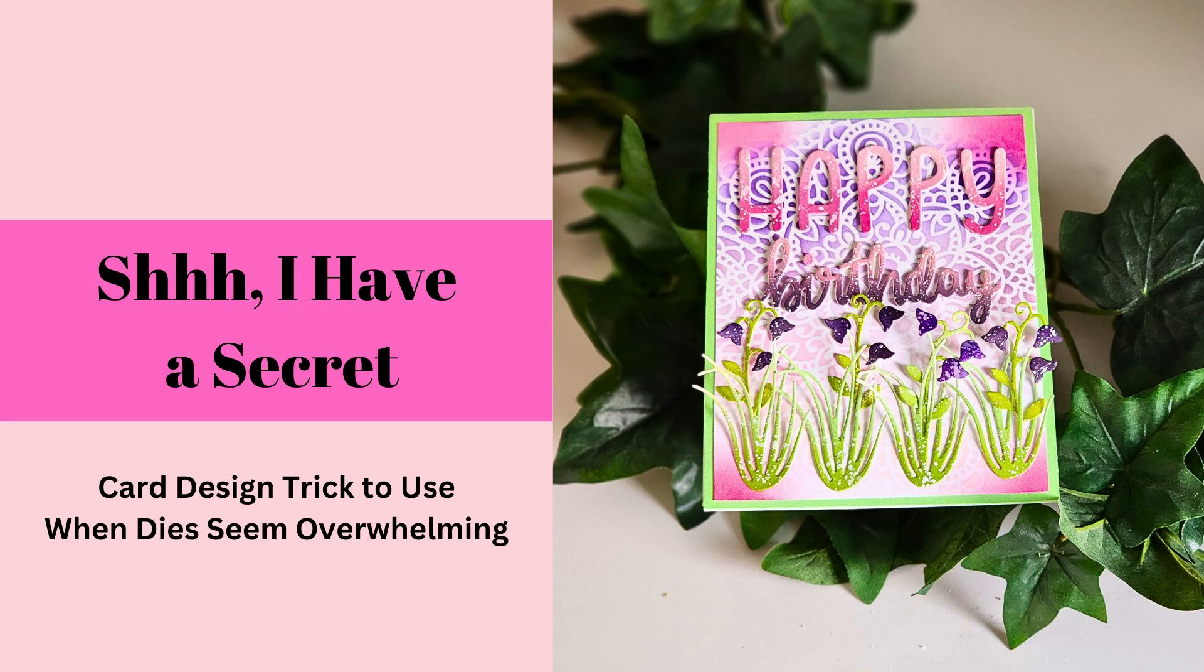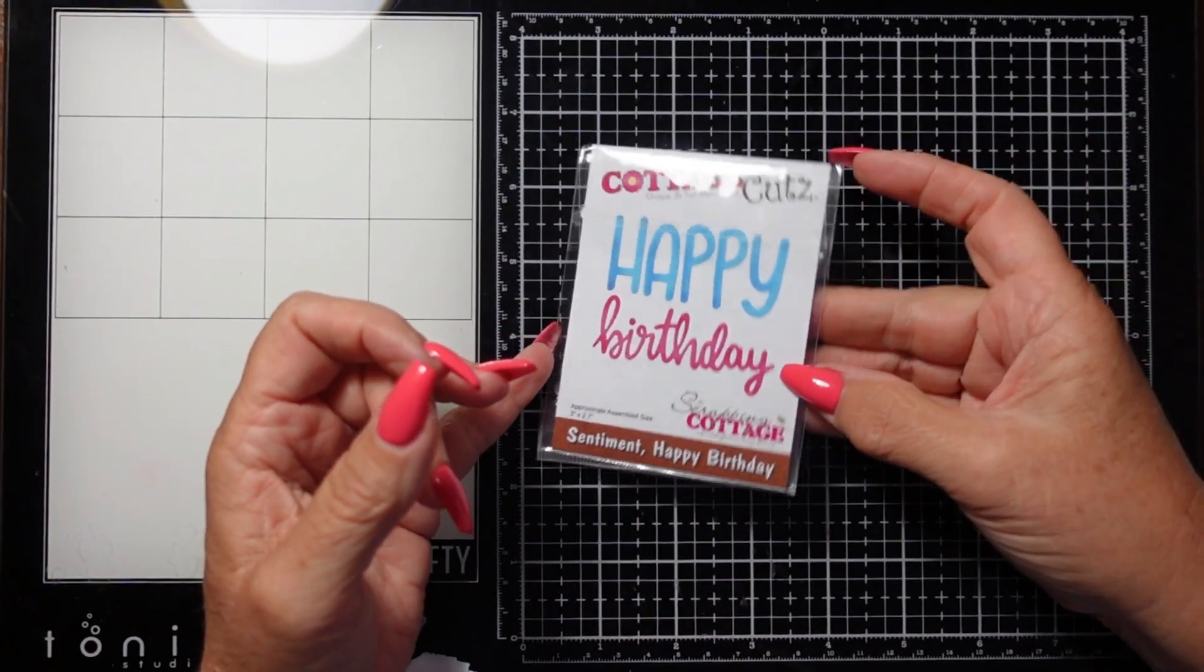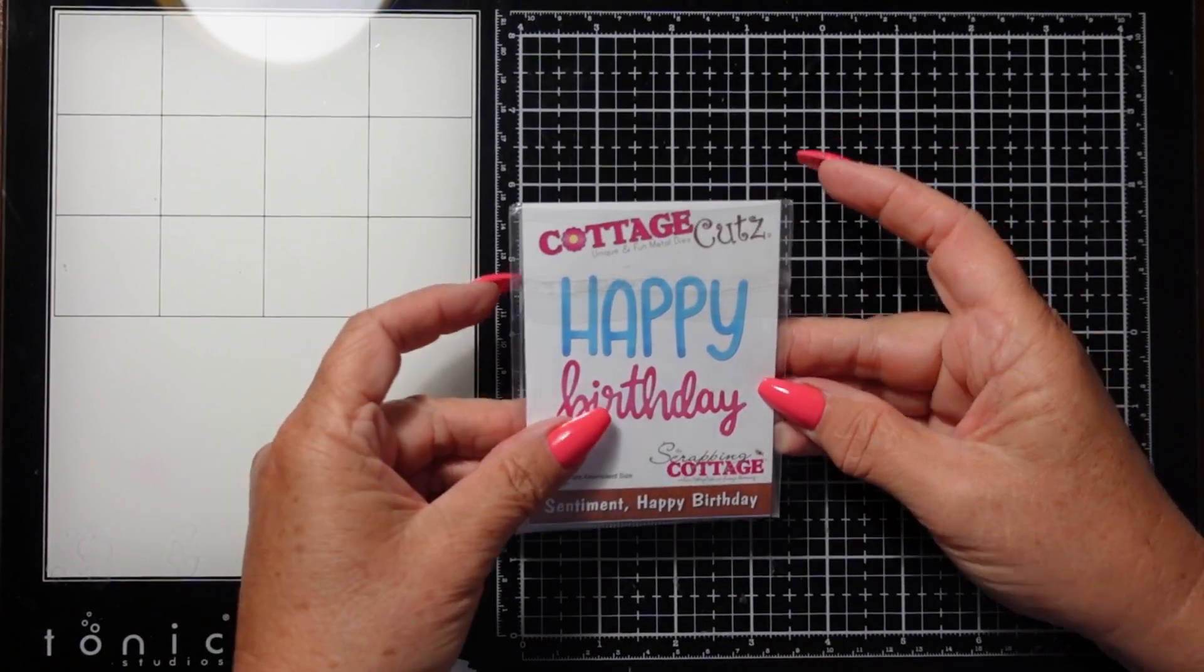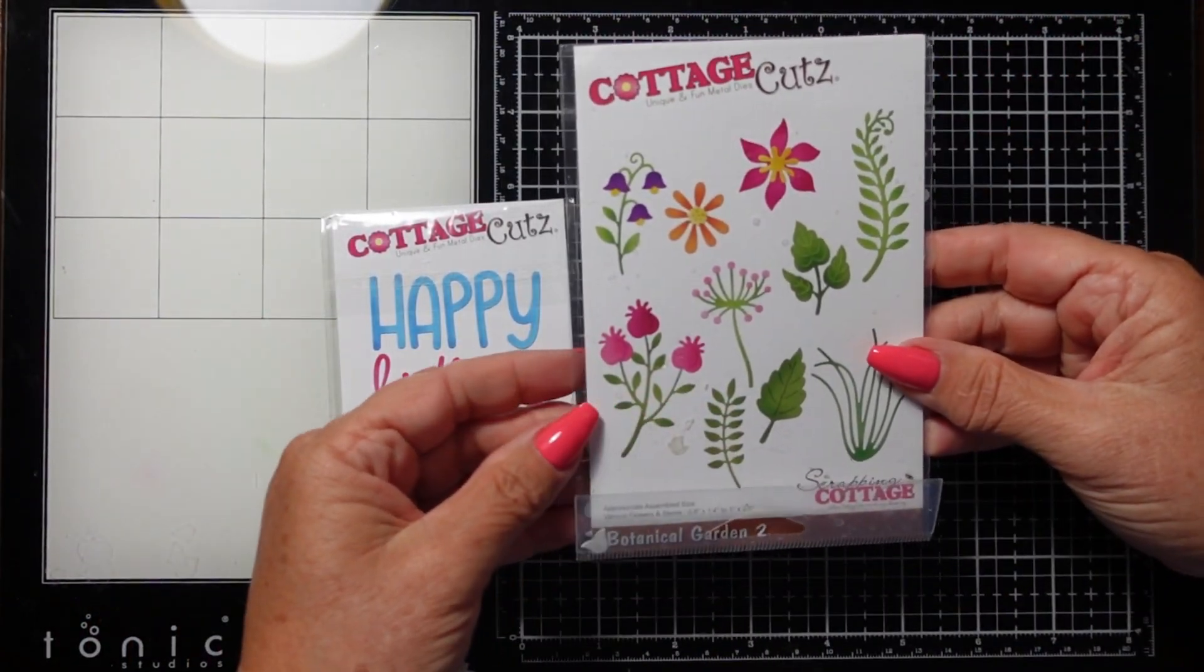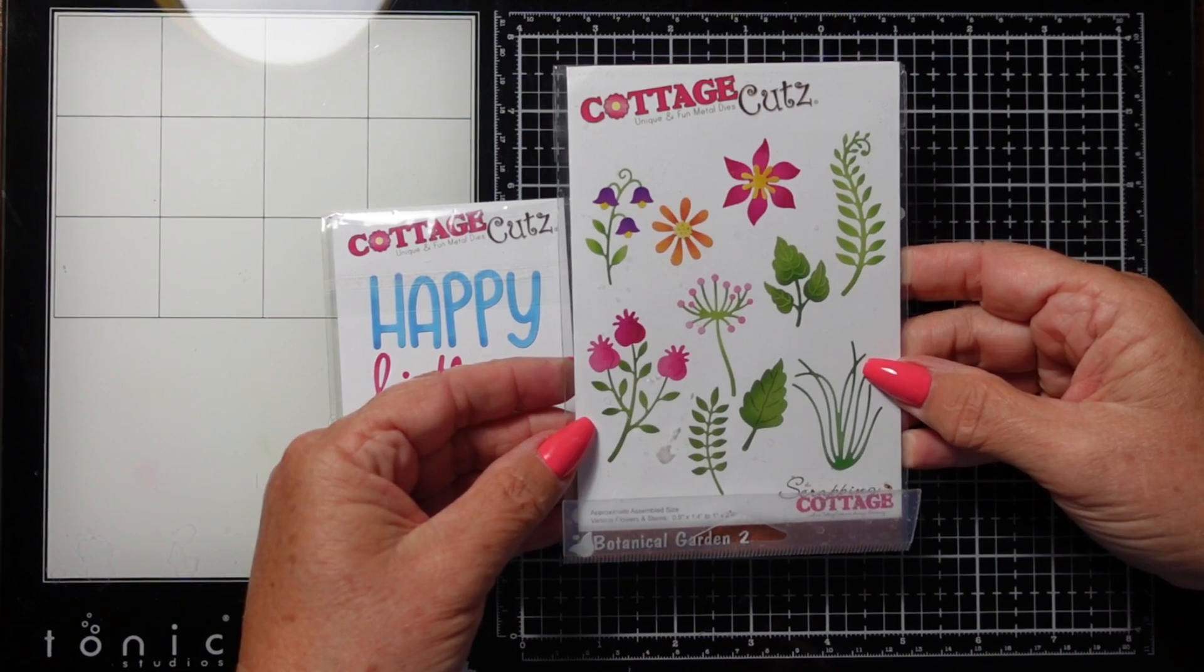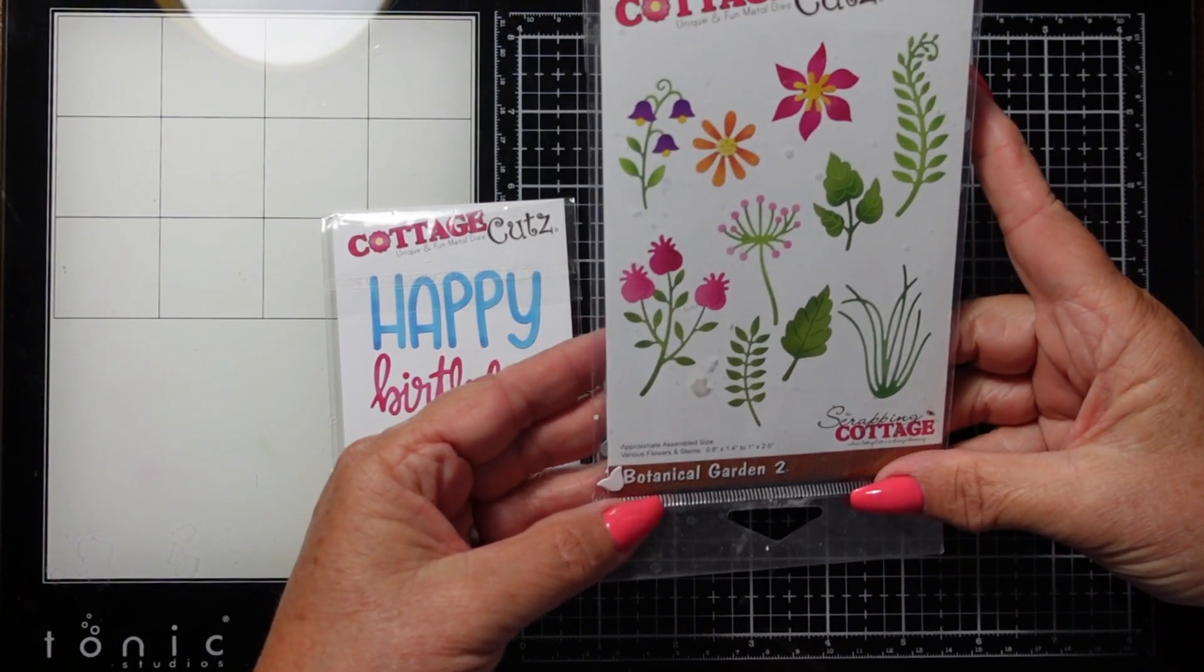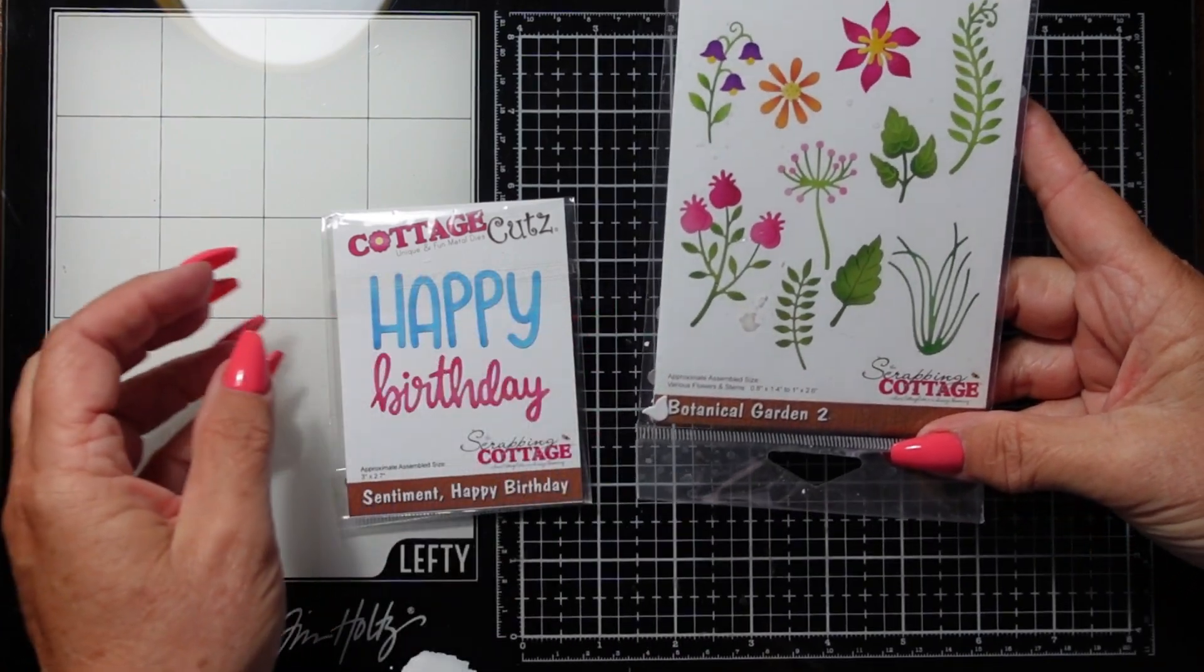When a die seems a little bit overwhelming to me to try to use all the images, I simplify. I'm starting here with the Happy Birthday sentiment, and then this is the one we're going to be talking about today—the Botanical Garden 2.